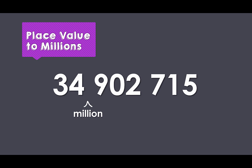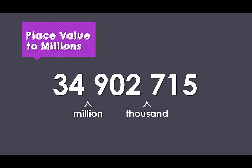An important thing to notice about this number is the zero. When we have zeros within a number, we can usually replace it with the word AND. So when we read this number, we have thirty-four million, nine hundred and two thousand. And now we can finish the number with our last set of three digits: seven hundred and fifteen.